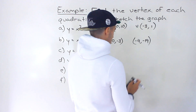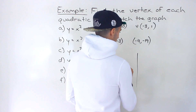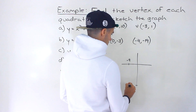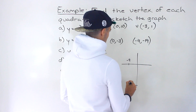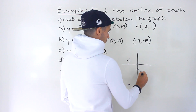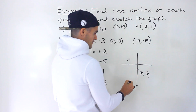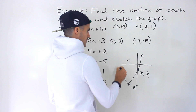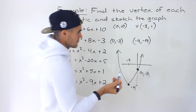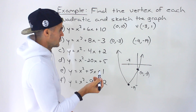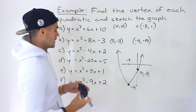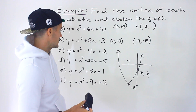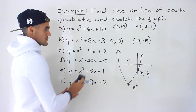Sketching part b: vertex at (−4, −19) is down here, and the y-intercept at (0, −3) is up here. The quadratic roughly looks like that. If you graphed this in Desmos you'd get a sketch that looks similar.